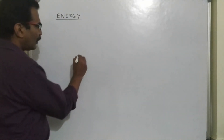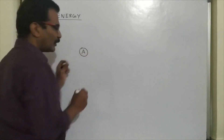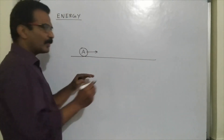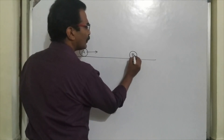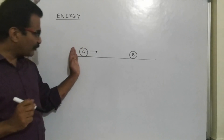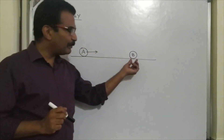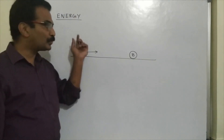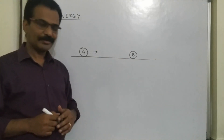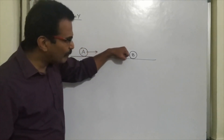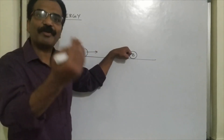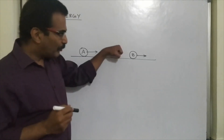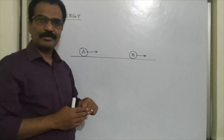Consider this case. A is a moving body and body B is stationary. The question is: is it possible for body A to do work on B? Yes. This moving body A hits body B — that means force is applied, and as a result, body B starts moving. Force is applied and the body is displaced, so work is done.